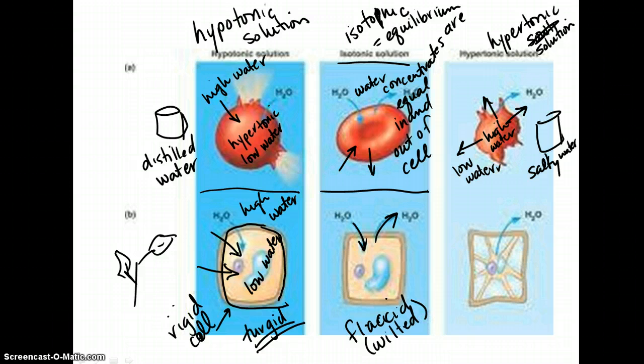It'll give it those turgid cells. It's just kind of limp because it hasn't expanded as much.